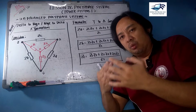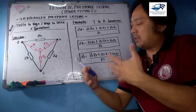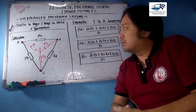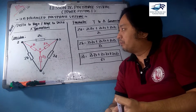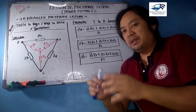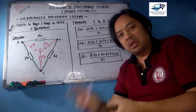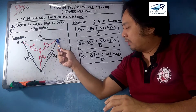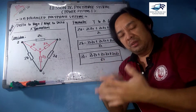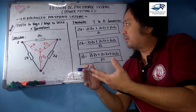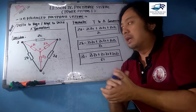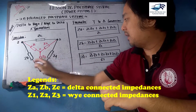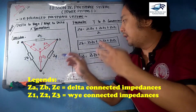This is a recall of what you have already learned from previous lessons. A delta connection is a triangle, while a Y connection is a star or T connection. If you have a delta and want to convert it to a Y-connected impedance, there are formulas to consider — and vice versa for Y-to-delta. In this case, Za, Zb, and Zc are the delta impedances.